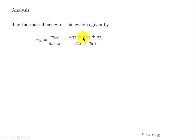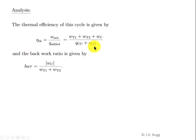For this cycle, both turbine stages and the compressor transfer work with the surroundings, so all go into the numerator. The heat added comes from both the combustion chamber and the reheater. All quantities are expressed on a per unit mass basis, and since the mass flow rate through all components is the same, everything is conveniently handled per unit mass. The back work ratio is the magnitude of the compressor work divided by the total turbine work from both stages.